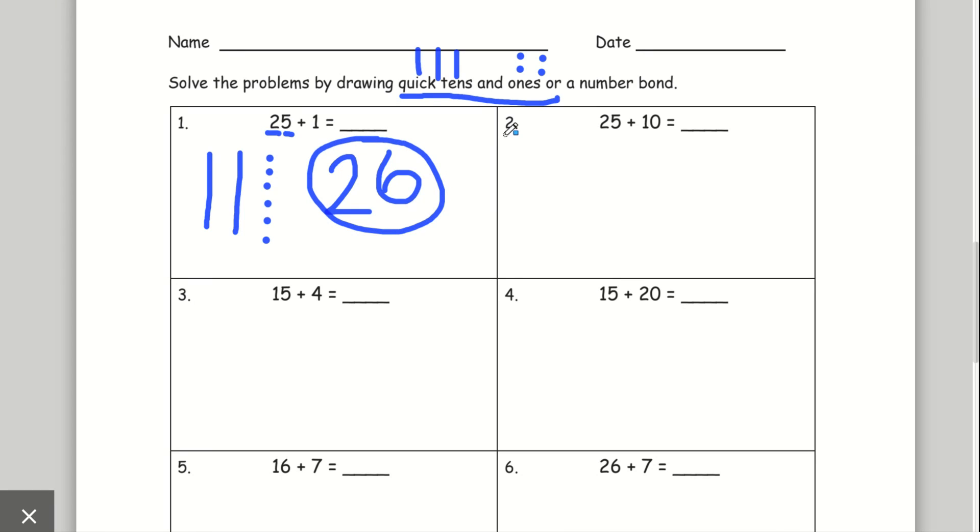Let's go to number two. 25 plus 10. I'm going to try again with the quick tens and ones.